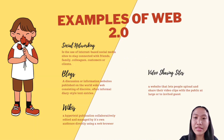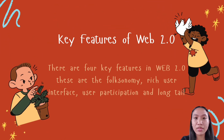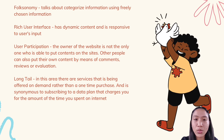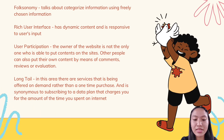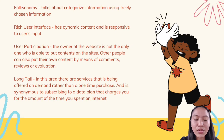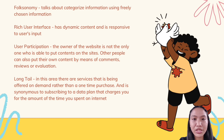Now let's talk about the key features of Web 2.0. There are four key features: folksonomy, rich user interface, user participation, and the long tail. The first one is folksonomy, which talks about categorizing information using freely chosen keywords.